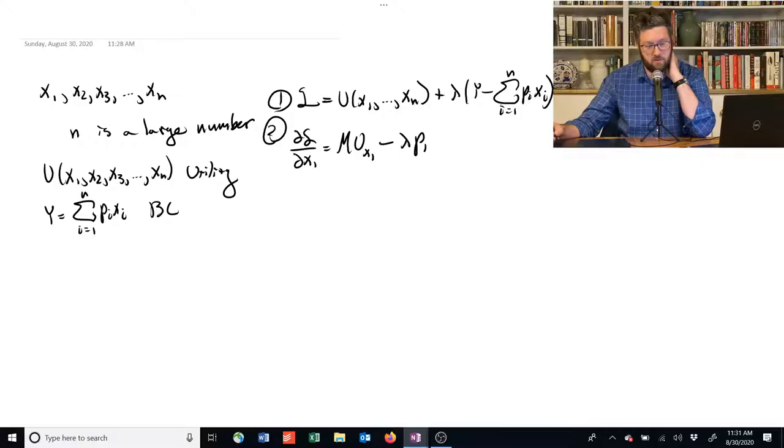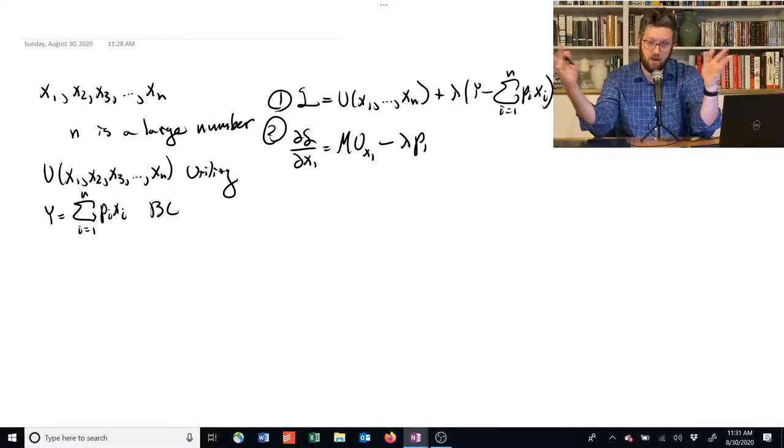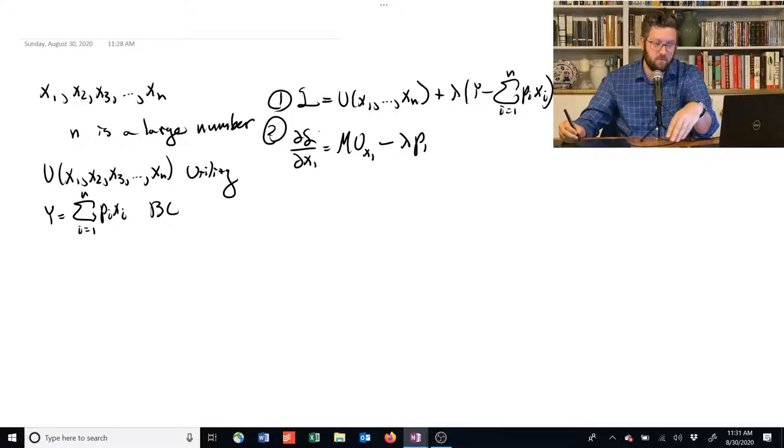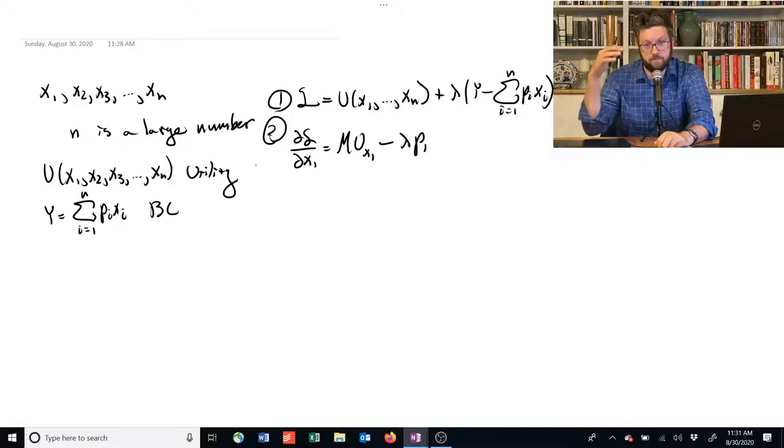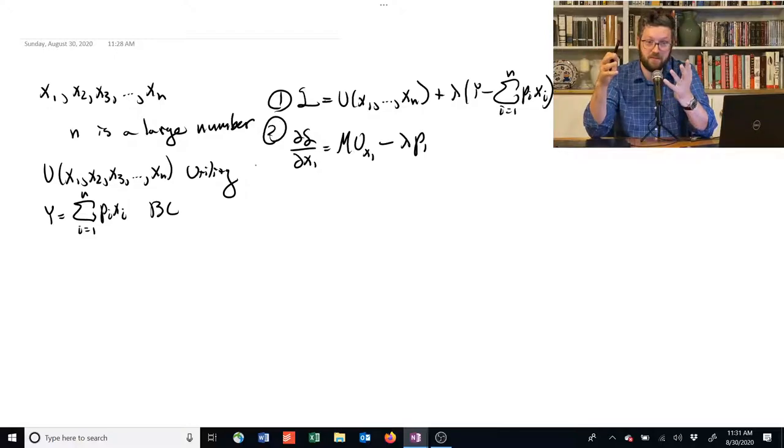Because remember, this is compactly representing P1 times X1 plus P2 times X2 plus P3 times X3 all the way out to XN and PN. So if we take the derivative with respect to that, we have to find one of these little terms is going to be equal to X1 and no exponent. So we just drop it and keep the things that are multiplying it, which is this Lagrange multiplier lambda and the price P1.